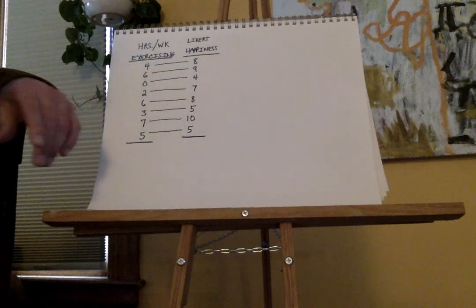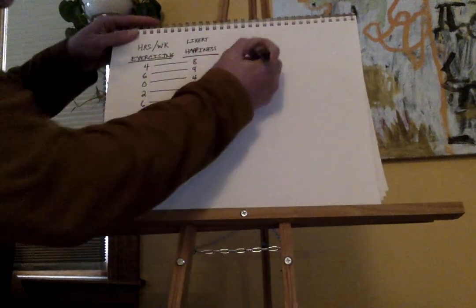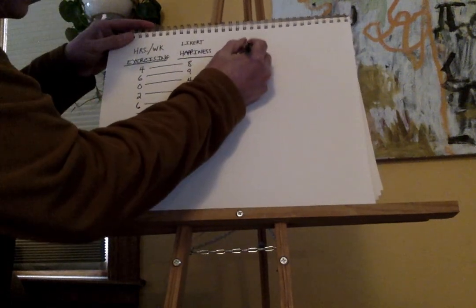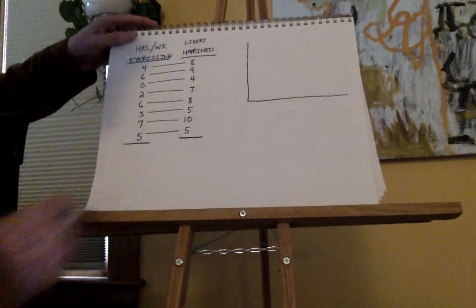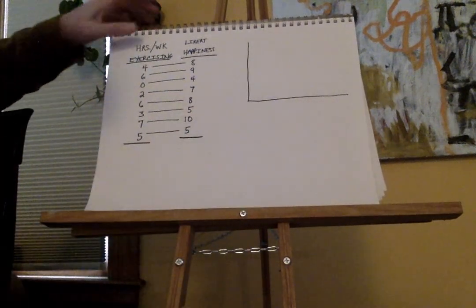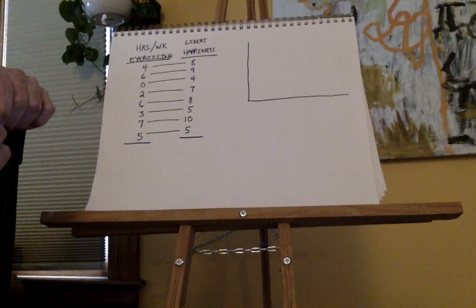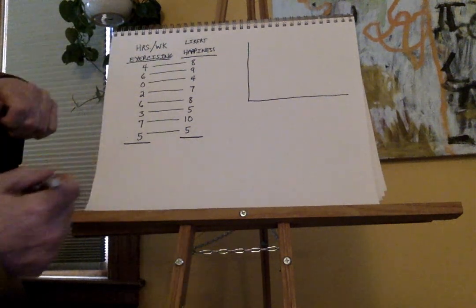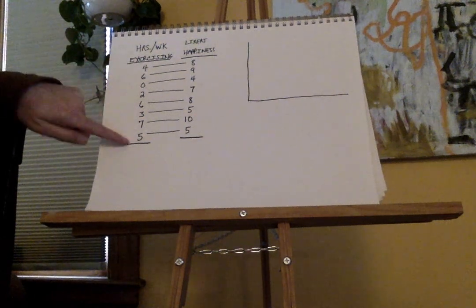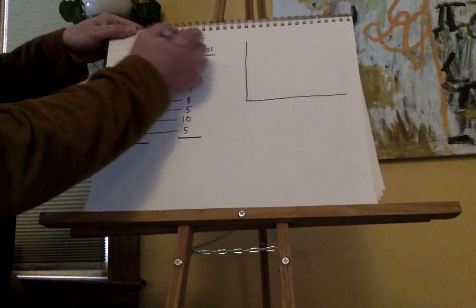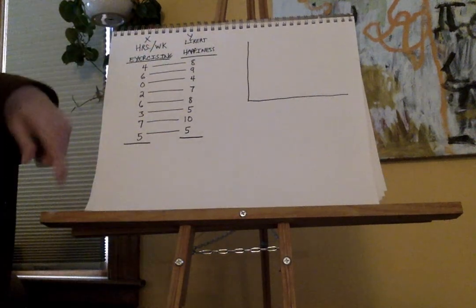The first thing I want to do here is my scatter plot. It gives us a graphic representation of the data. We have hours of exercise per week — we'll call that our x variable. We'll call the Likert our y variable.